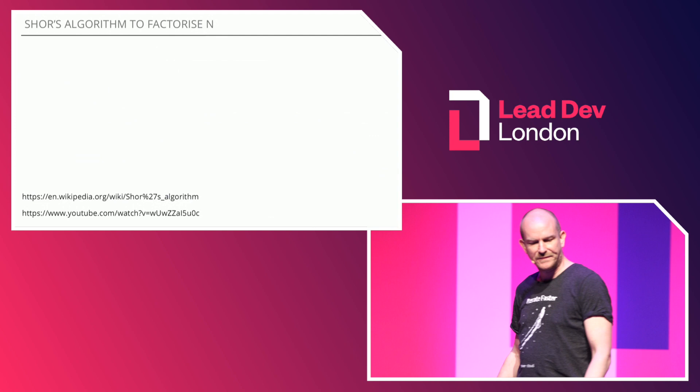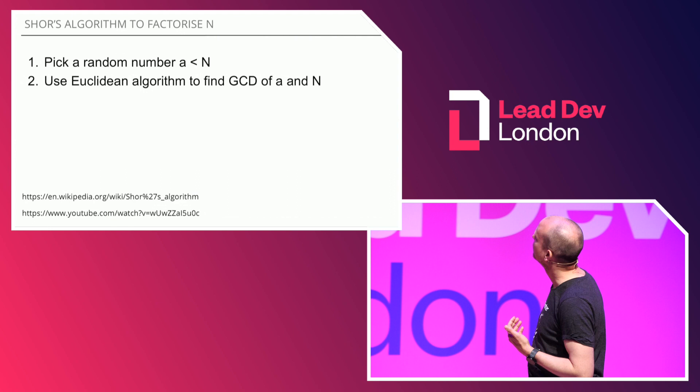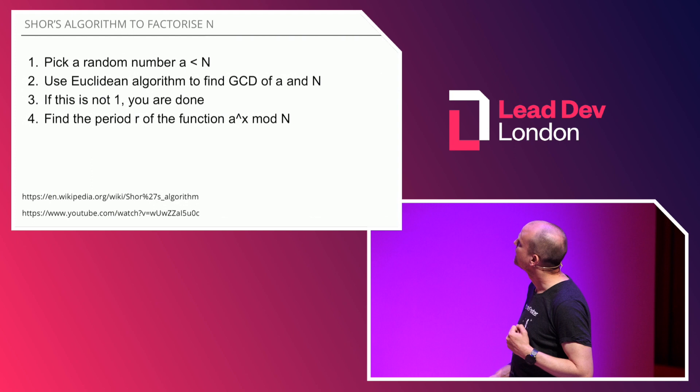Shor's algorithm is a quantum algorithm. It runs on quantum computers and was first formulated back in the early 90s. How does it work? Well, if you're factorizing a number, I'm going to run through the steps really quickly. If you don't follow this, don't worry — I've got an example.